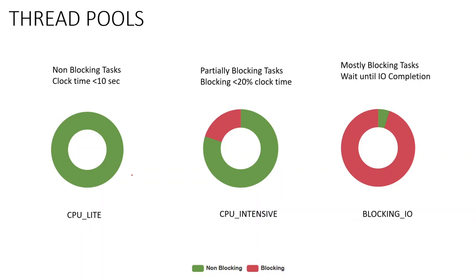The third is Blocking I/O, which is used when doing I/O operations like calling a database or the file system. Database select, delete, read, or file read and write operations all fall under Blocking I/O — these are blocking approximately 90% of the time. Any message processor related to database operations (select, insert, delete) or file operations will use the Blocking I/O thread pool.